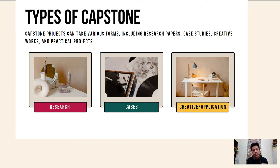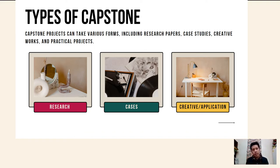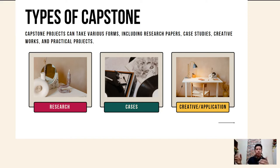You could also choose what they call a creative or application-based capstone study or capstone project. In this case, you have to demonstrate skills, probably through the organization of events — a conference, a symposium, or any activity that would culminate the years of students studying in that specific field. A capstone could be a creative output. For example, students in the field of performing arts would organize an event related to performing, such as a concert or a performance, as long as it demonstrates the skills of the student.